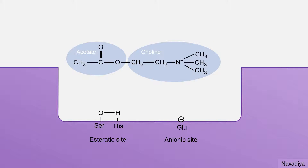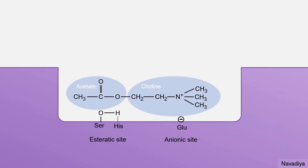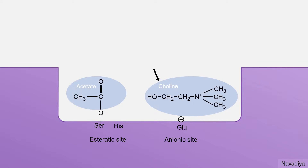Here we have the acetylcholine molecule. There is no need to remember the chemical structure — just focus on the overall process. The process starts with electrostatic attraction of the positively charged nitrogen to the anionic site, and attraction of this carbon to this oxygen. This brings the acetylcholine molecule close to the active site, forming an enzyme-substrate complex, followed by breaking of the acetyl link, resulting in formation of free choline and acetylated enzyme.